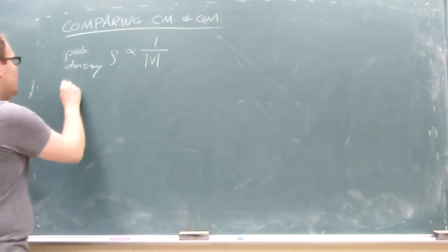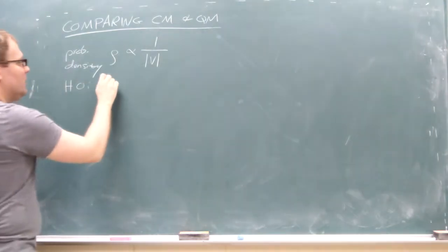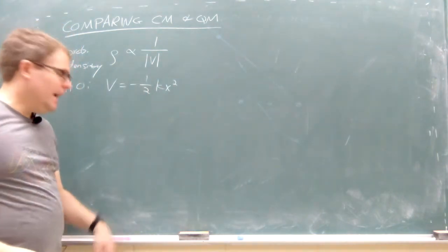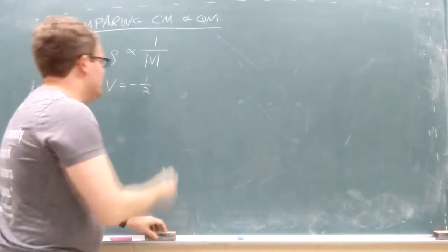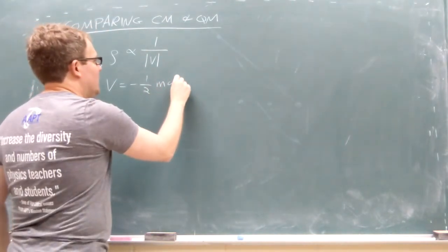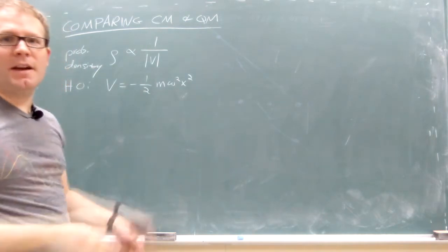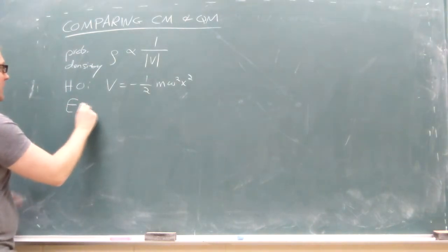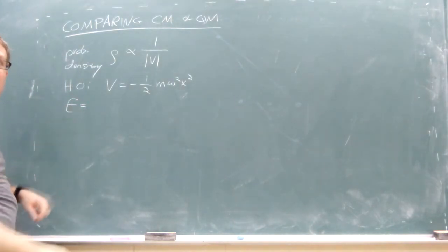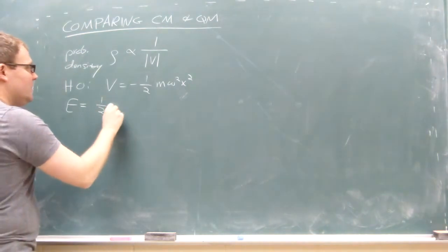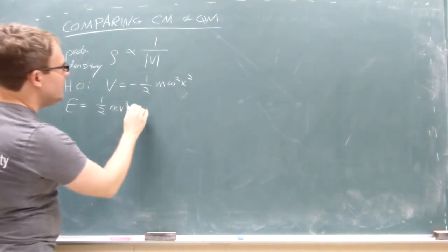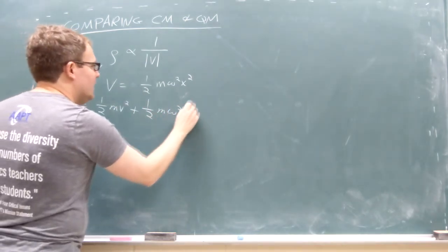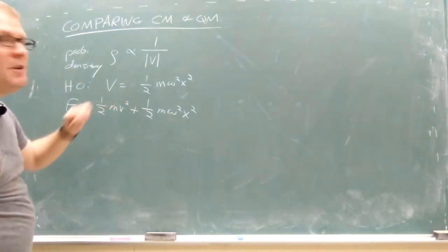Let's take the harmonic oscillator potential: V = ½mω²x², where ω = √(k/m). In classical mechanics we have conservation of energy — the total energy never changes — and that equals the kinetic energy ½mv² plus the potential energy ½mω²x².